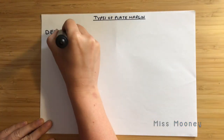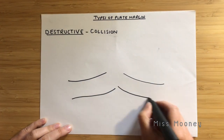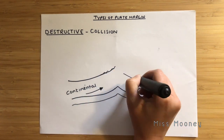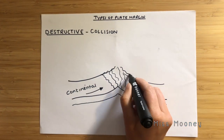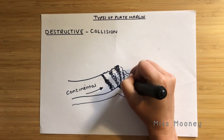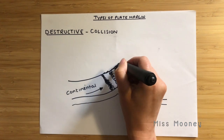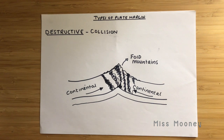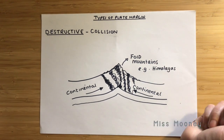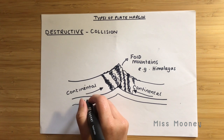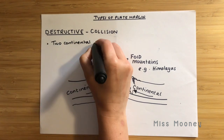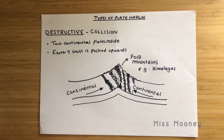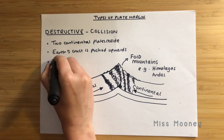Finally, a collision boundary is what happens when two continental plates collide. Neither can sink as they are the same density, so the two plates crumple into one another and fold upwards to form fold mountains. Earthquakes are very common at collision margins and there are no volcanoes because there is no magma erupting. A great example, which links to our next case study, is the Himalayan mountains, where the Indo-Australian plate is colliding with the Eurasian plate. The Himalayan mountains are thought to be growing about 6.1 centimetres a year.